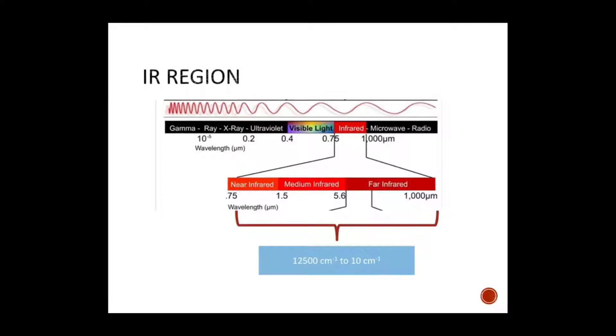First, let's look at the electromagnetic radiation. In electromagnetic radiation, the IR region is present in between the microwave and visible light regions.